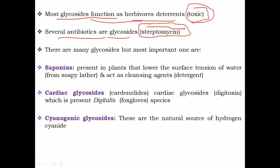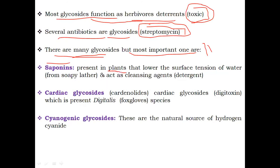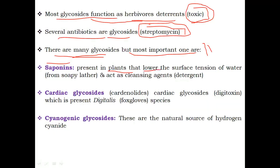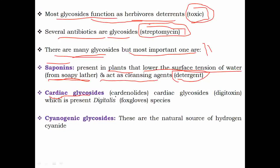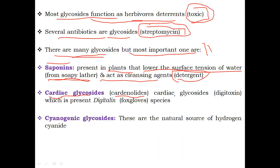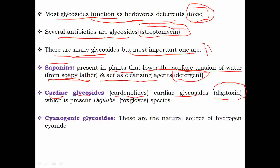There are many glycosides which occur in nature, but the three most important ones are: first, saponins — present in plants with the property of lowering the surface tension of water, forming a soapy lather with water, and thus acting as a cleansing agent or detergent. The second important one is cardiac glycosides, also known as cardenolides.